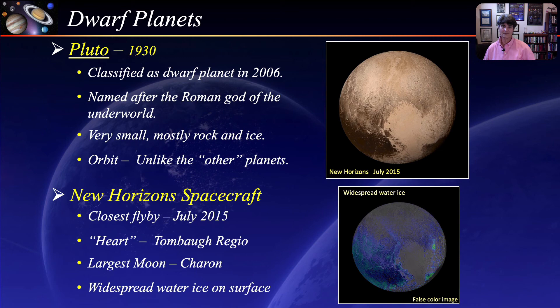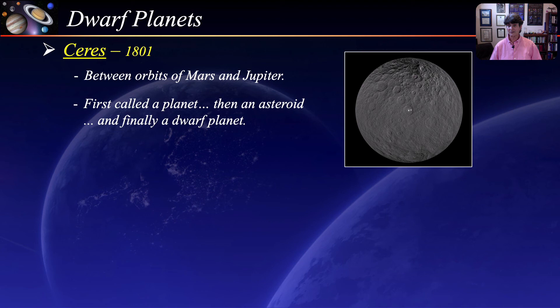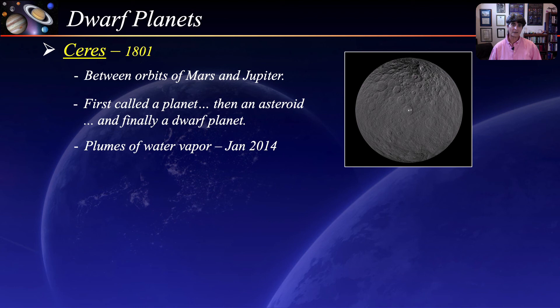Our next dwarf planet is Ceres, discovered by the Italian astronomer Giuseppe Piazzi in 1801, more than 100 years before Pluto. It lies between the orbits of Mars and Jupiter and is the largest body within the asteroid belt. When first discovered, it was called a planet, but after the rapid discovery of similar objects, Ceres and the others were called asteroids, and in 2006 it was eventually classified as a dwarf planet. In January of 2014, emissions of water vapor were detected from several regions of Ceres, making it a very exciting target for study.